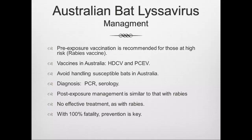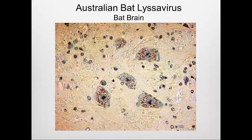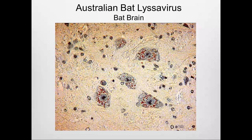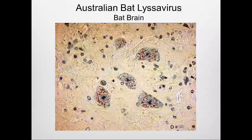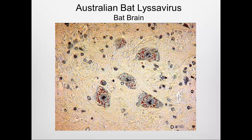Management: pre-exposure vaccination is recommended for those at highest risk, using the rabies vaccine. Two vaccines are available in Australia — a human-derived vaccine and a purified chick embryo vaccine. Avoid bats in Australia. Diagnosis is by PCR serology, managed similarly to rabies. There is no effective treatment; because it has 100% fatality, prevention is key. Remember: Australian bat Lyssavirus, Australia has no rabies, it's relatively rare but highly fatal if acquired.